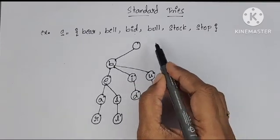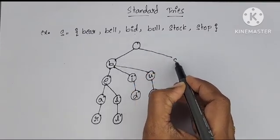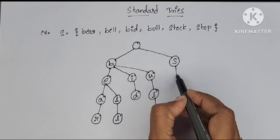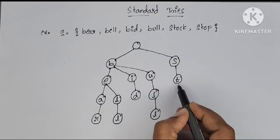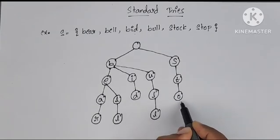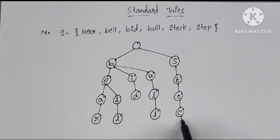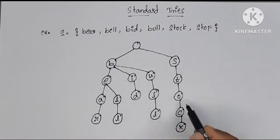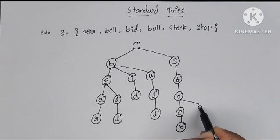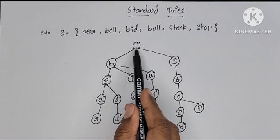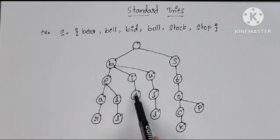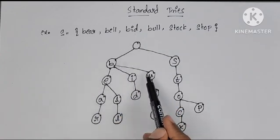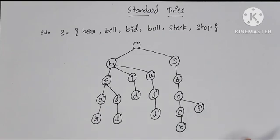The next one is stock. I do not have a node with S, so we have to create node for S and T, O, C and K. We will go to next string that is stop. S is already there, T, O. Only the next last letter is P. This is one simple example of standard try. When you traverse from root to any leaf node, you can retrieve a string.